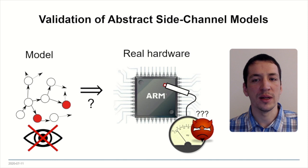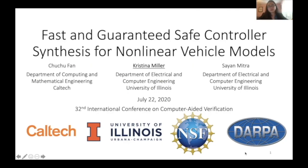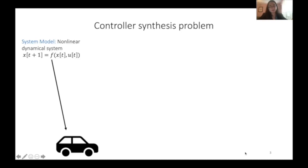My name is Kristina Miller, and I will be talking about fast and guaranteed safe controller synthesis for nonlinear vehicle models. We will have some nonlinear dynamical system — this could be any vehicle model such as a car. The specifications we will be synthesizing controllers for are reach-avoid specifications, where the starting set is shown in blue, the goal set is shown in green, and the unsafe set is shown in red.